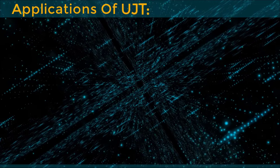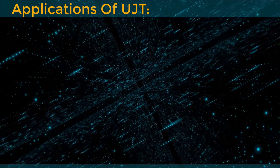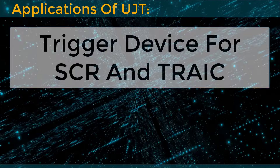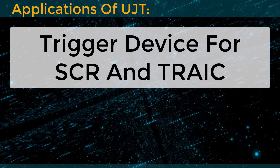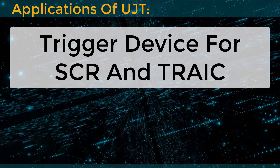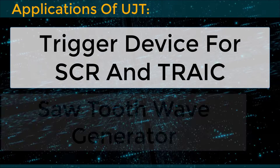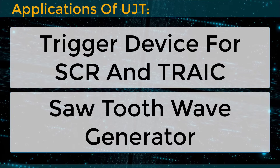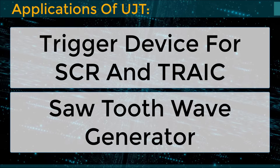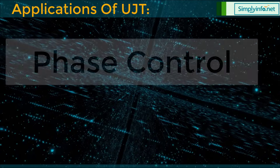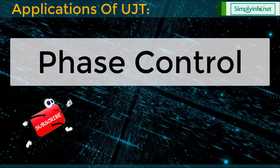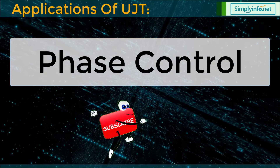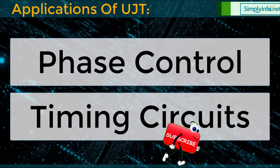Applications of UJT: trigger device for SCR and triac, sawtooth wave generator, phase control, timing circuits.